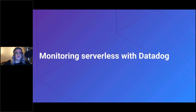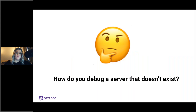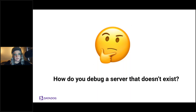Now that we know what we're working with, let's talk about how to monitor serverless environments. The main problem we're trying to solve is: how are we going to debug a server that doesn't exist? How can we take traditional observability practices and adapt them to a serverless ecosystem?